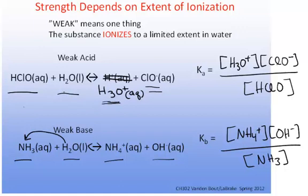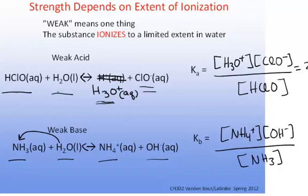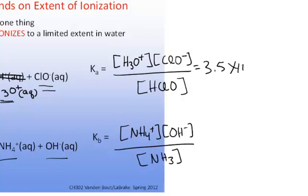So, for example, Ka for hypochlorous acid is 3.5 times 10 to the minus 8. It's a very small number, so the equilibrium lies far to the left. And for ammonia, the Kb for ammonia is 1.8 times 10 to the negative 5. Again, the equilibrium lies far to the left for these weak acids and weak bases.